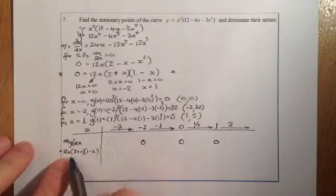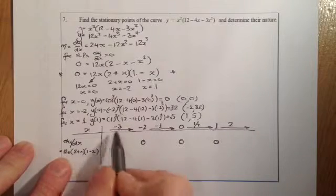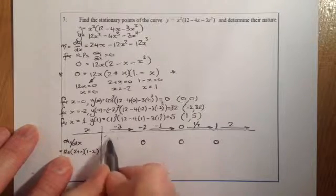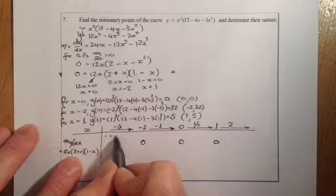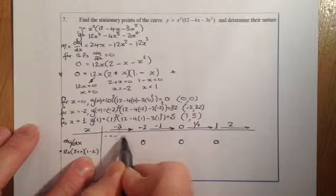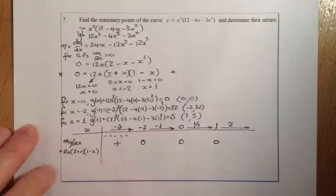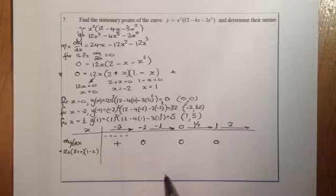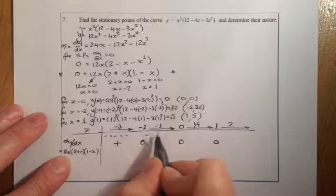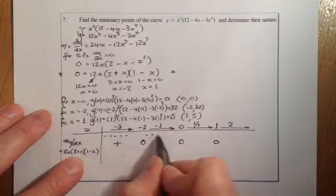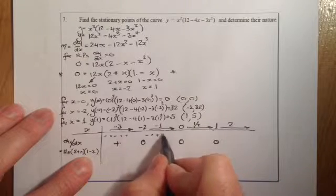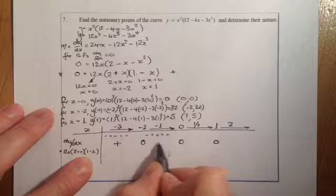Substituting minus 3: 12 times minus 3 gives minus 36 (negative); (2 plus minus 3) gives minus 1 (negative); (1 minus minus 3) gives positive 4. Negative times negative times positive gives a positive gradient. Substituting minus 1: 12 times minus 1 is negative; (2 minus 1) is positive; (1 minus minus 1) is positive 2. One negative gives a negative gradient.